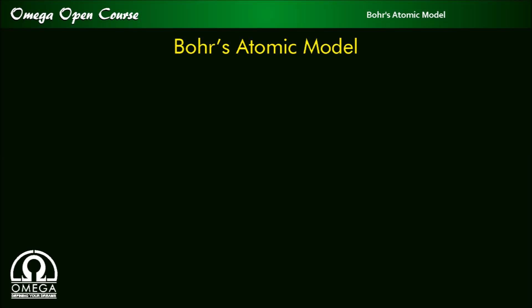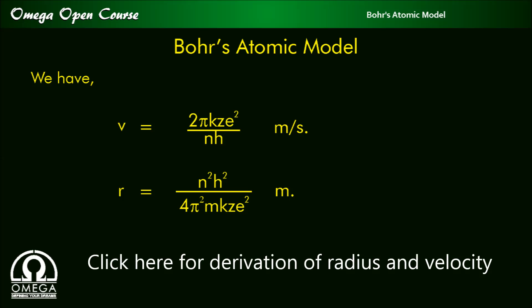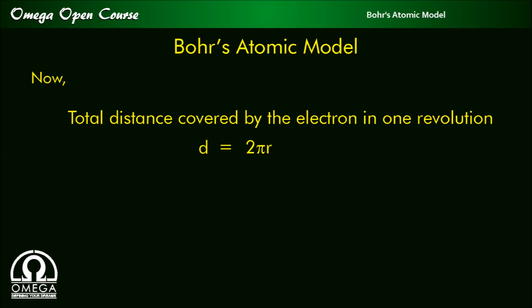We already have the expression for velocity and radius. Velocity v is equal to 2πkze² / nh meter per second, and radius r is equal to n²h² / 4π²mkze² meter. To learn how the expression for radius and velocity has been derived, you can click on the link shown or see the descriptions below.